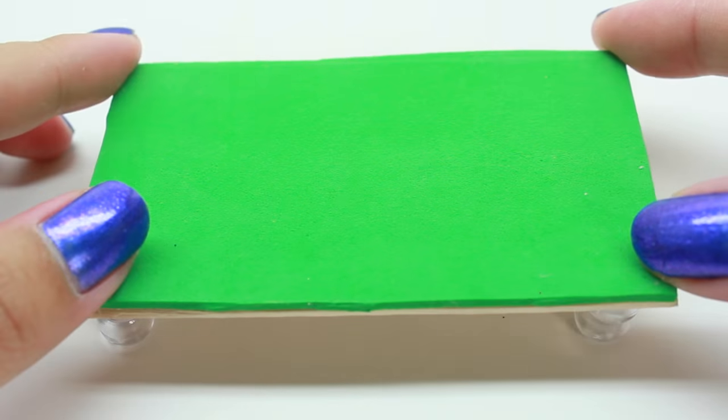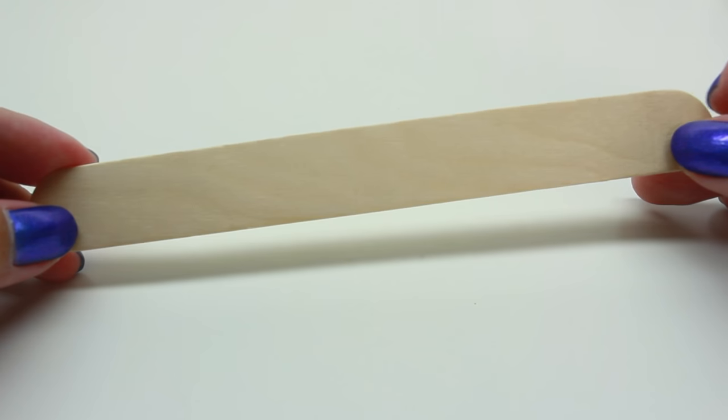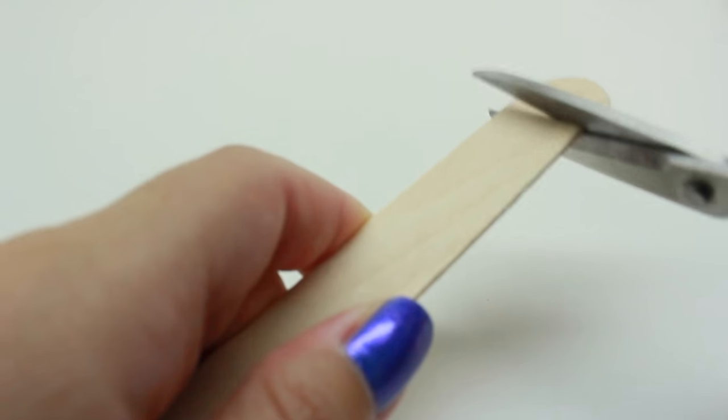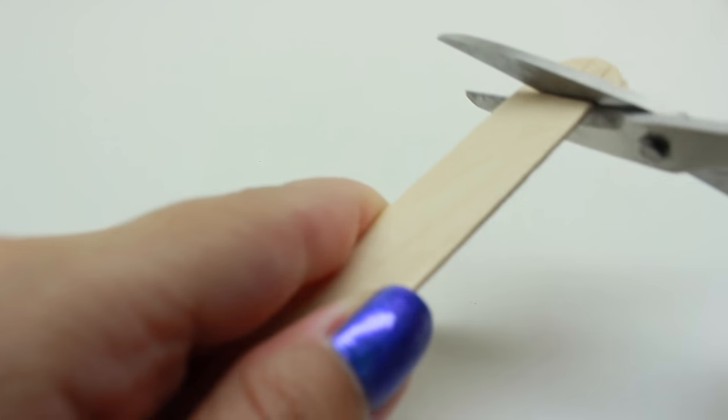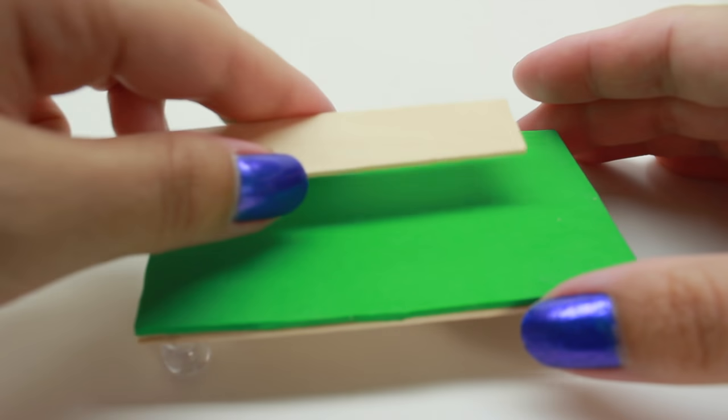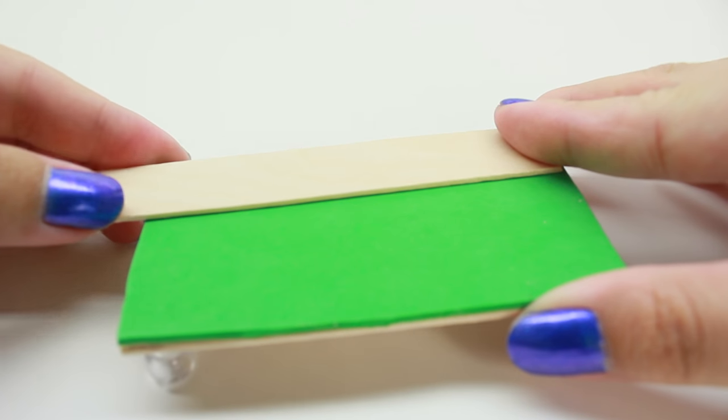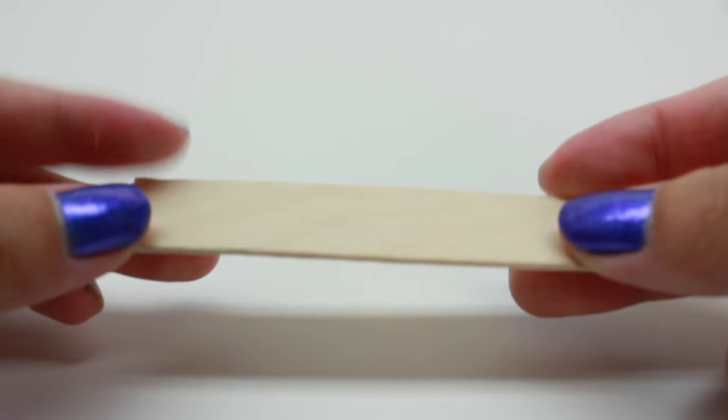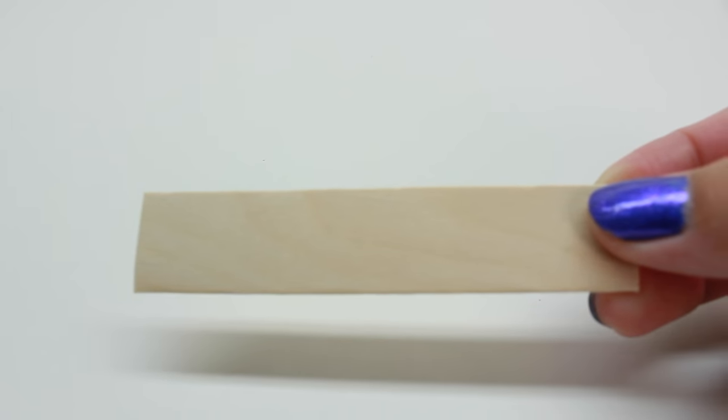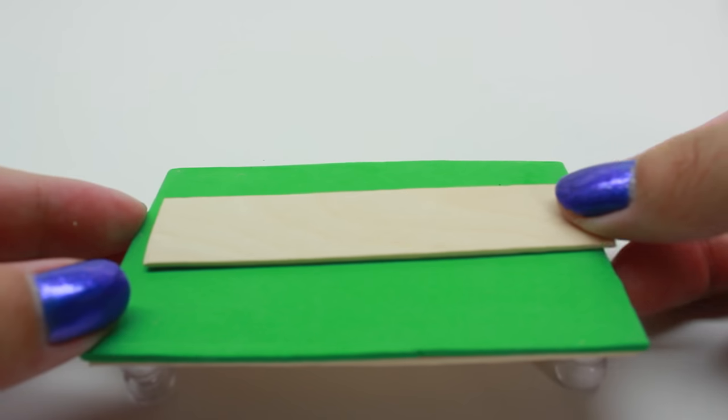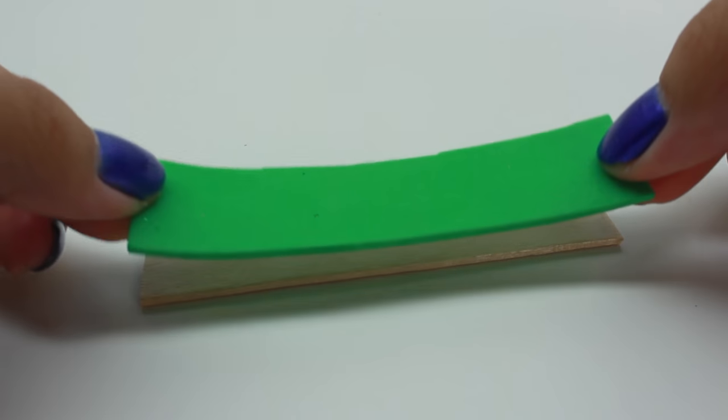Once it's completely dried, go ahead and flip it over. Now take a medium-sized popsicle stick and go ahead and cut off the rounded edge. You want this to be the same size as the desk, so go ahead and cut off any excess. You should have a piece that's exactly the same size as the desk.